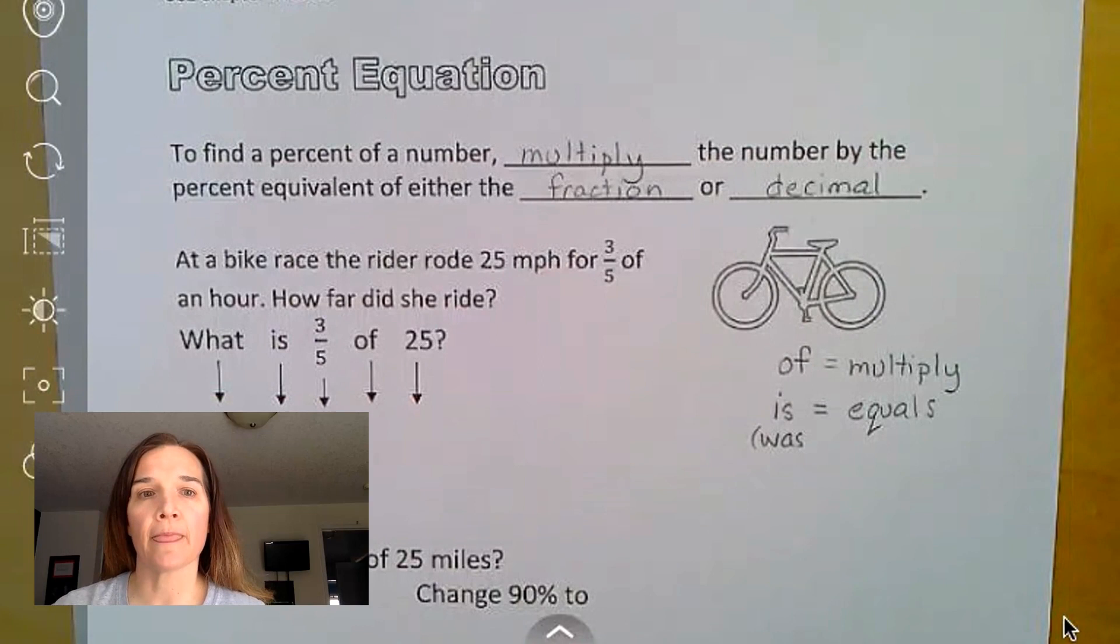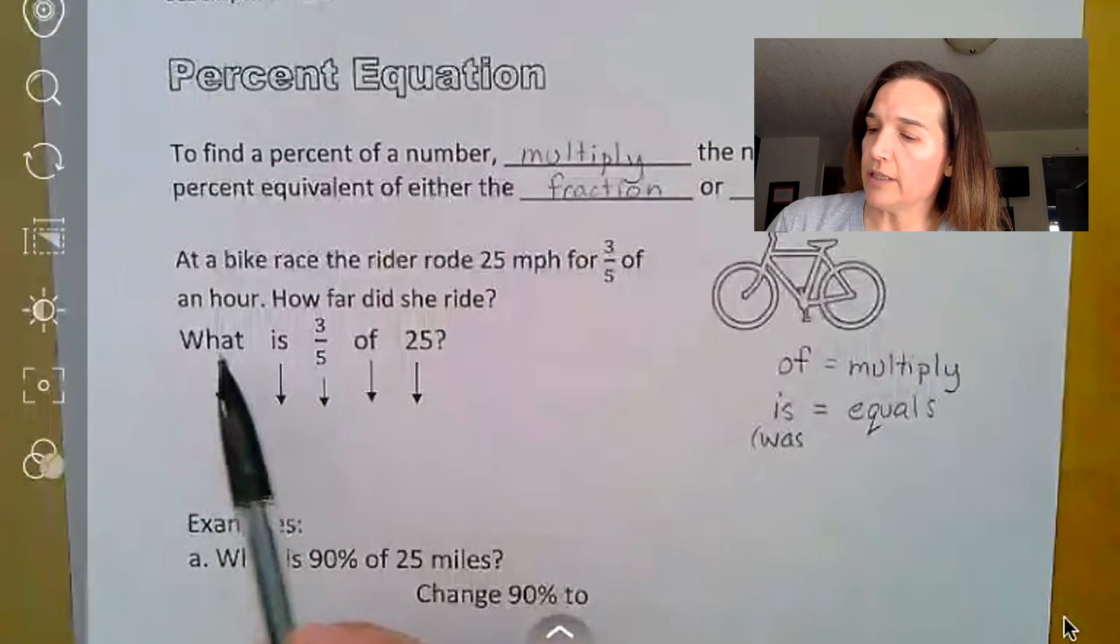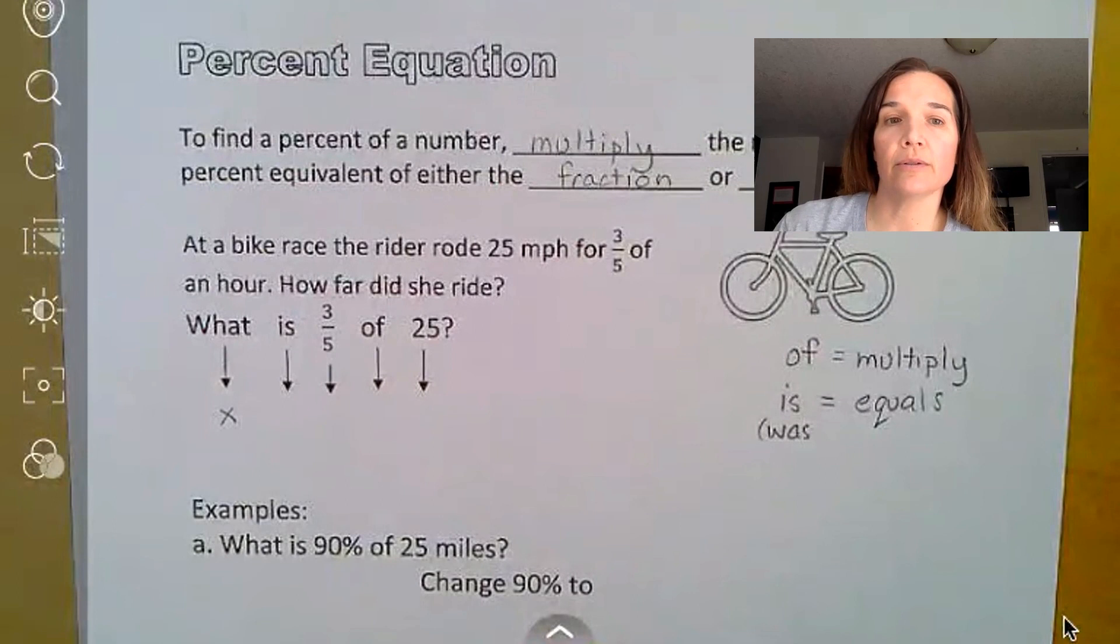So first one, at the bike race, the rider rode 25 miles per hour for three fifths of an hour. How far did she ride? So we're going to literally translate each one of these. It says what? That's going to be my x because I don't know it, so I make a variable in its place until I can figure out what it is.